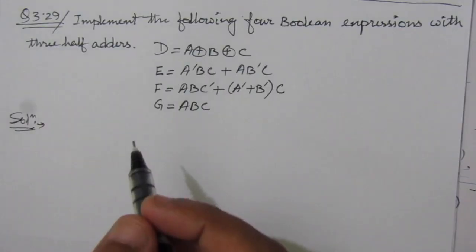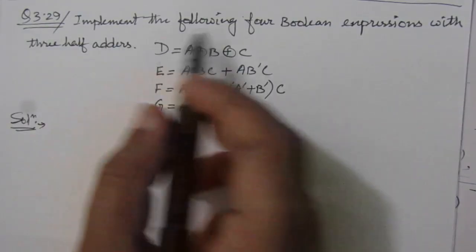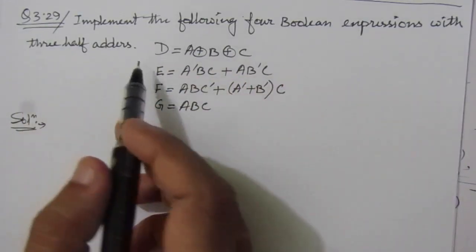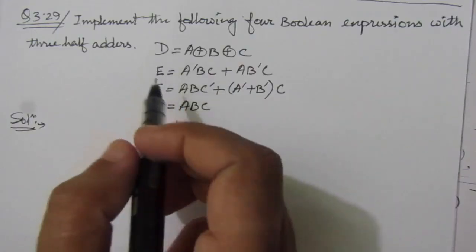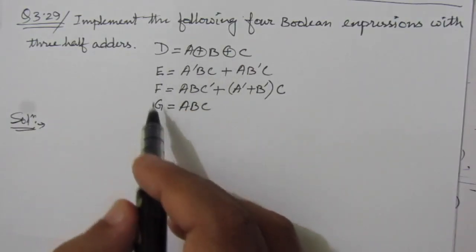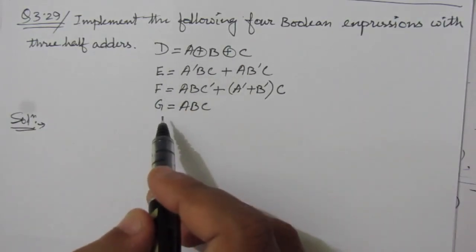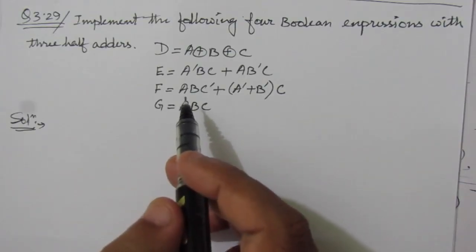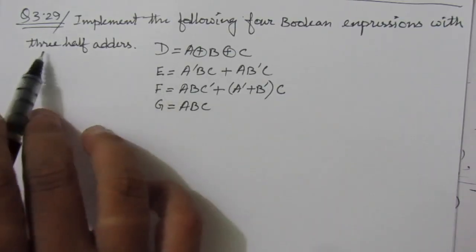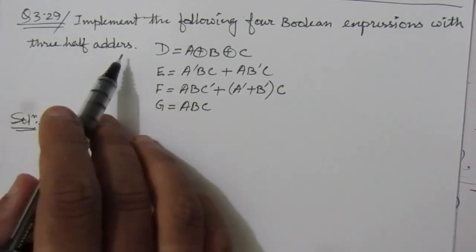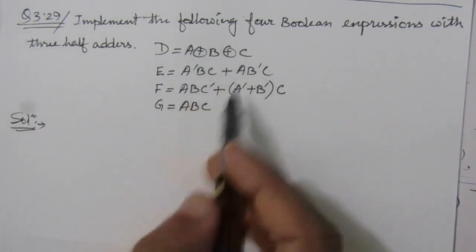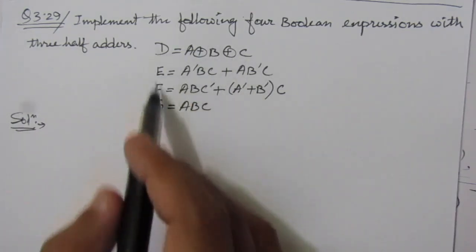The problem is: implement the following 4 Boolean expressions with 3 half adders. We are given 4 Boolean expressions D, E, F, and G, and we have to use a 3 half adder circuit to realize or implement these 4 functions.